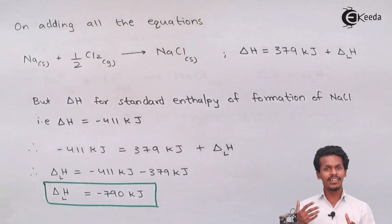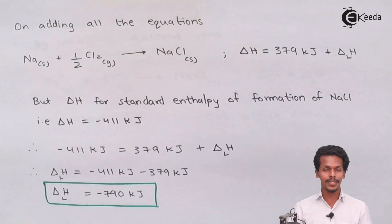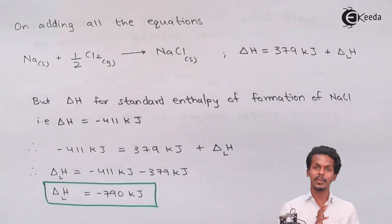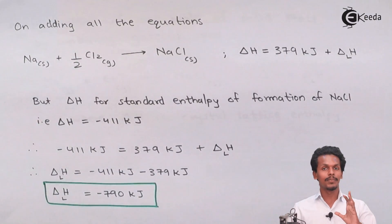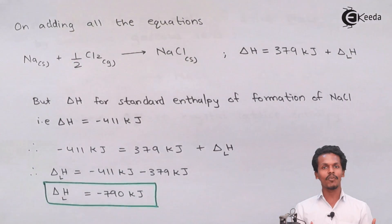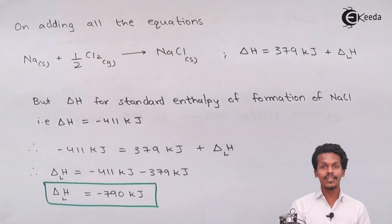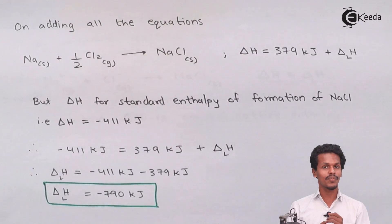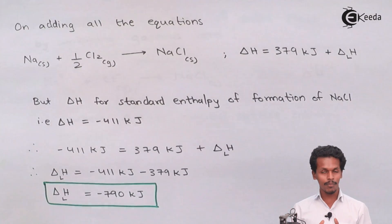This value of −790 kJ indicates how much energy is released when Na⁺ and Cl⁻ ions come together to form solid NaCl. Because of the Born-Haber Cycle, it is very easy to calculate the lattice energy of a particular ionic solid, since lattice energy cannot be measured directly. We take the help of Hess's Law combined with the Born-Haber Cycle to determine it.